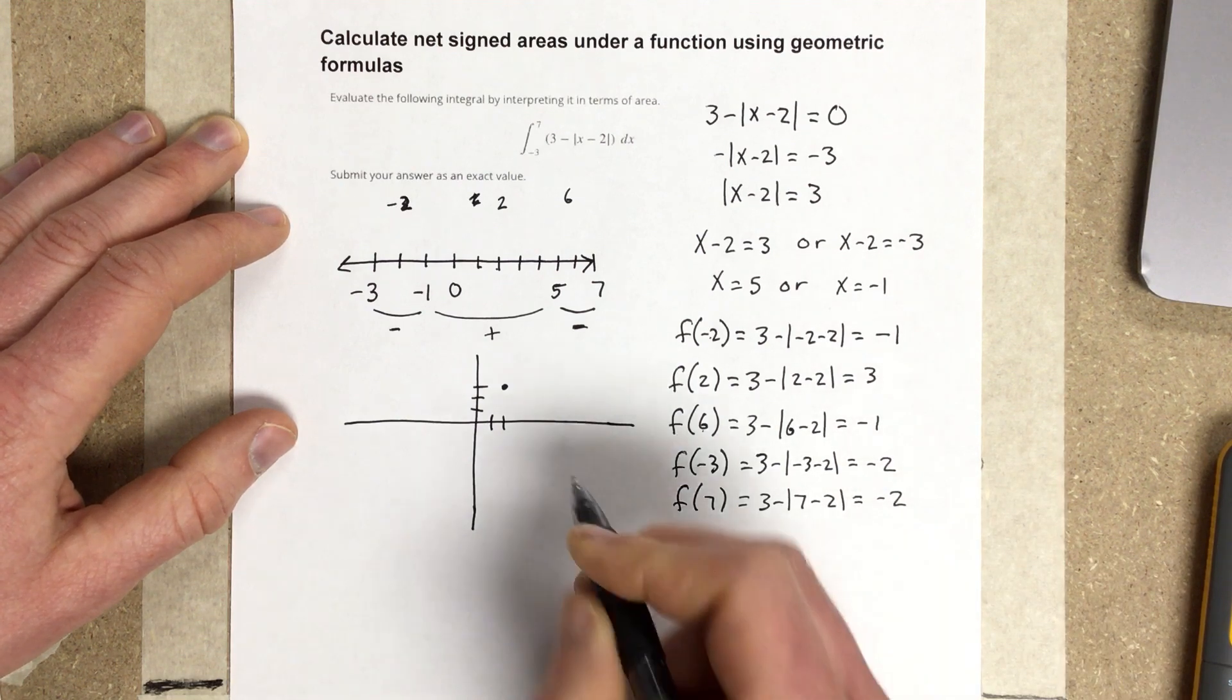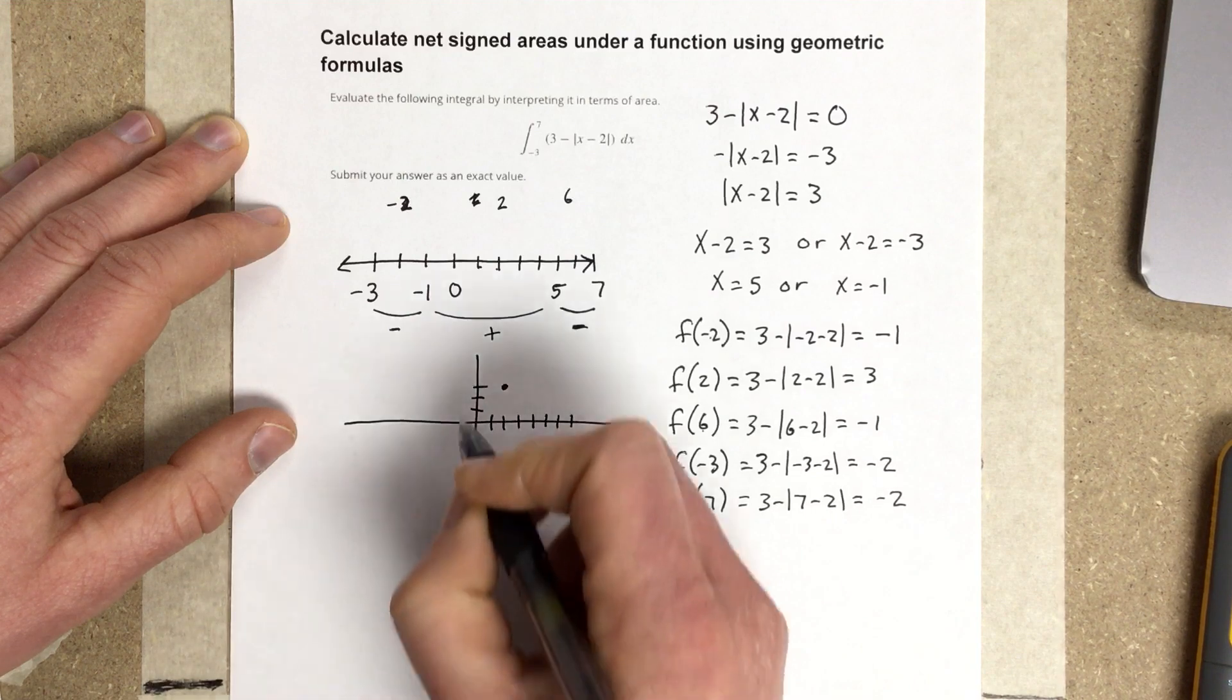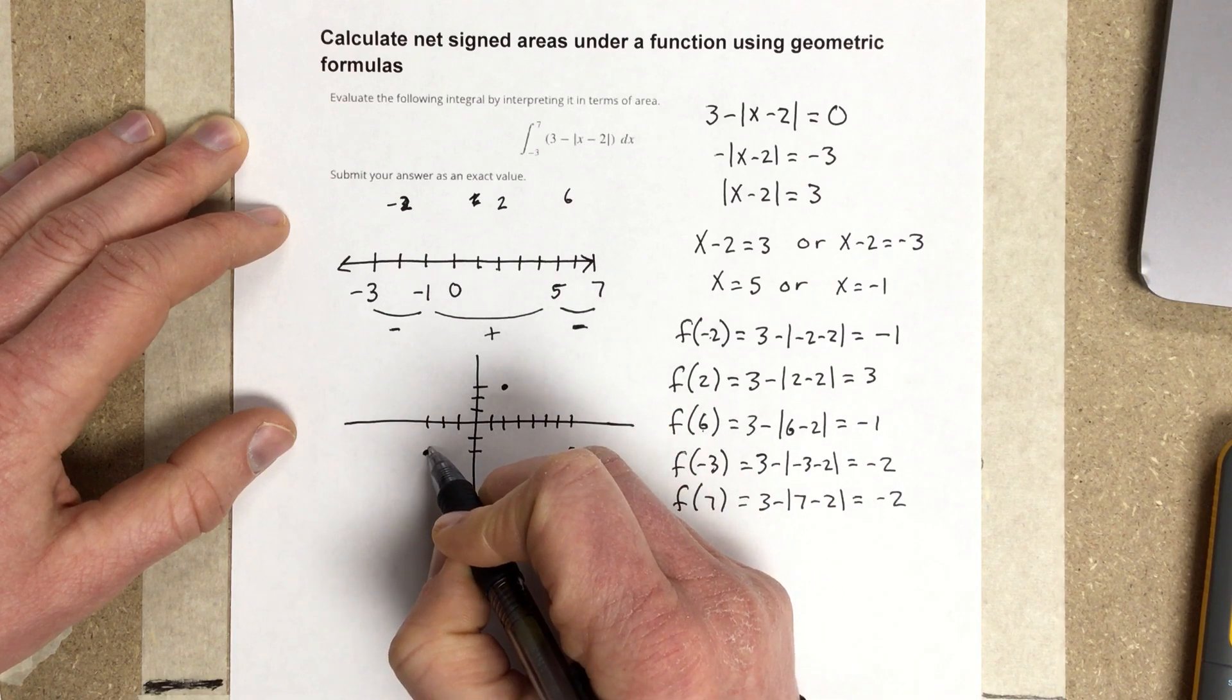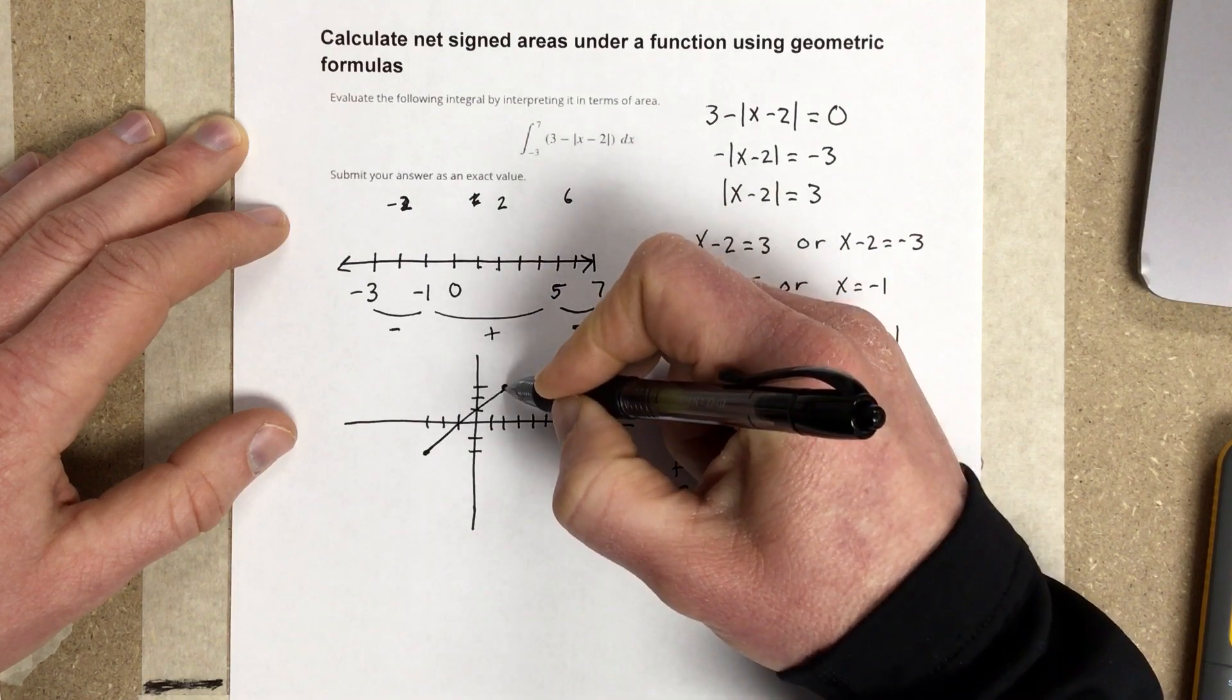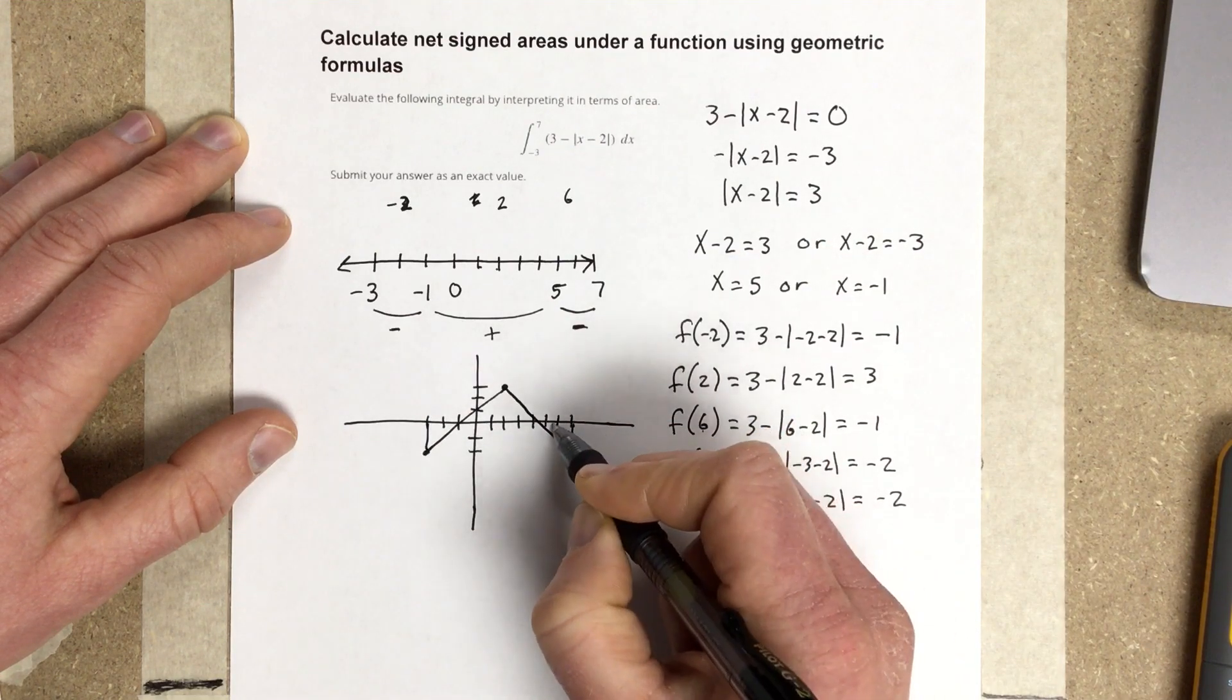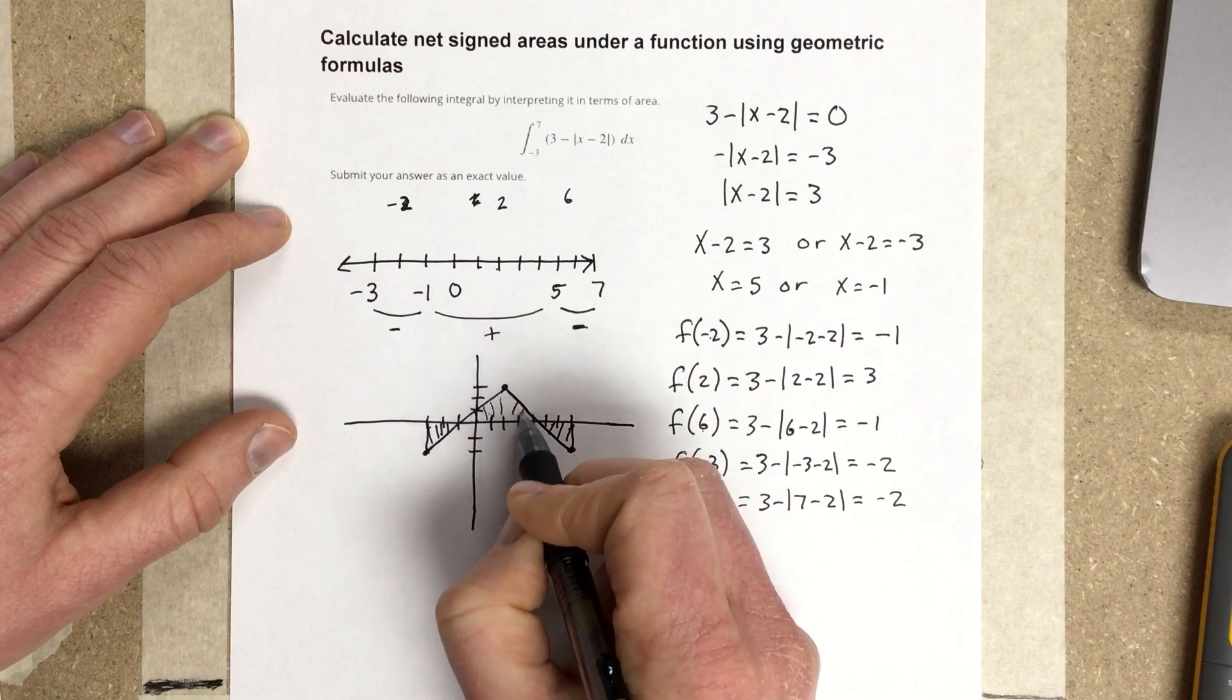So, I've got 7, negative 2. So, that's this point here. And, I also get negative 3, negative 2. So, this thing would look like so. And, so you can see that what we're looking at, when I said these were negative areas, it's because they're below the x-axis. And, positive area, because this area is above the x-axis.